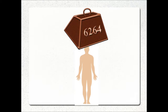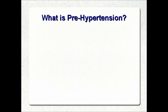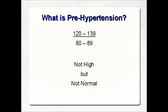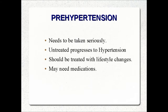What happens if one or both of those numbers is higher than normal? You may fall into what is known as prehypertension — pressure readings between 120 to 139 systolic over 80 to 89 diastolic mmHg. This is the middle of the road where your blood pressure is too high to be labeled normal, but not high enough to be considered hypertension. Prehypertension, if left untreated, will usually progress to hypertension, so it needs to be treated with lifestyle changes at a minimum, and may even require medication.